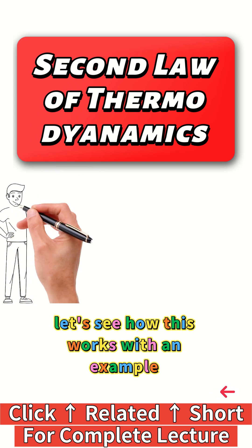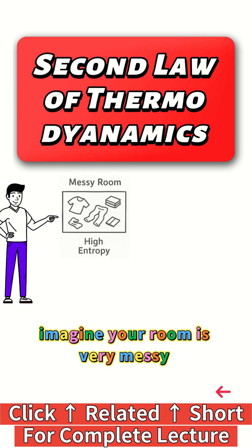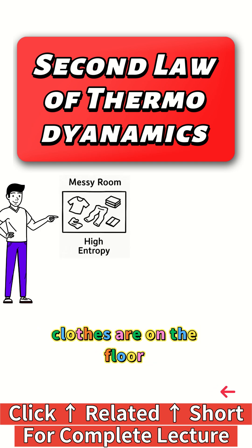Let's see how this works with an example. Imagine your room is very messy. Clothes are on the floor. Books are scattered everywhere. This is a high entropy state because it's very disordered.